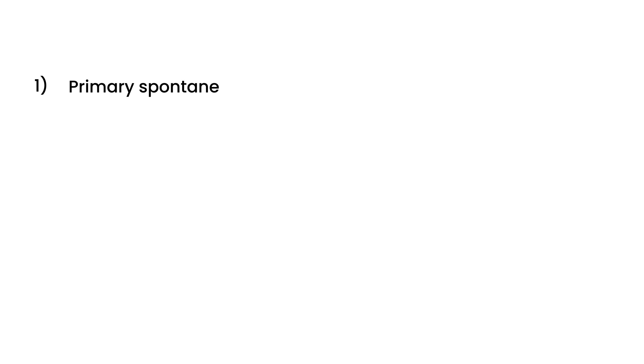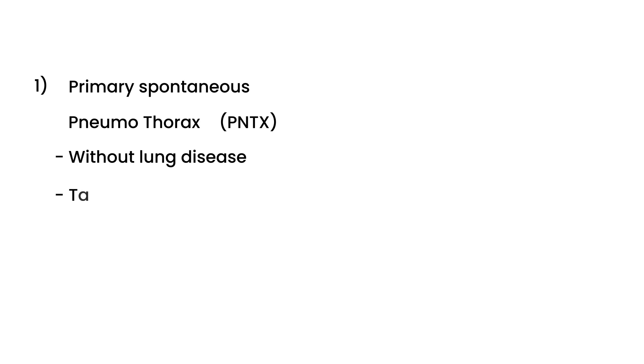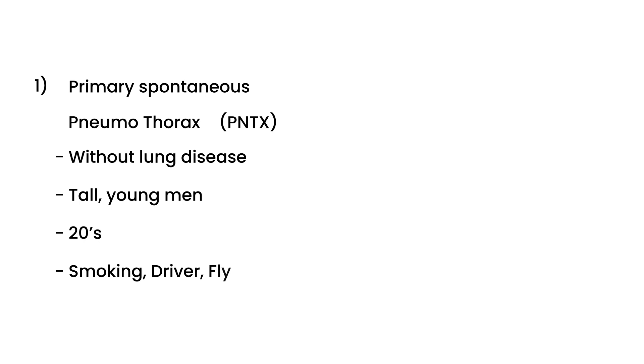There are five different types of pneumothorax. The first one is called primary spontaneous pneumothorax. The primary type involves no lung disease. This is typically something that can occur in tall, young men, usually in their 20s. It can happen from smoking, from diving, and also from high-altitude flying.